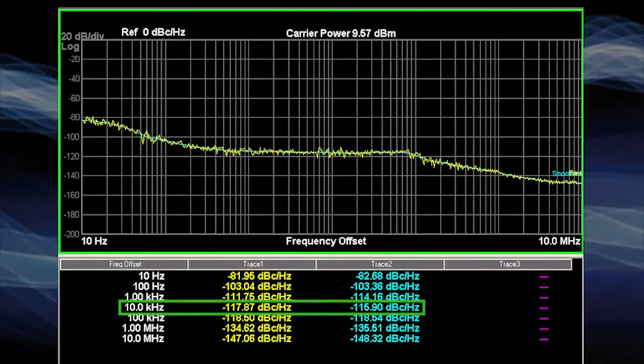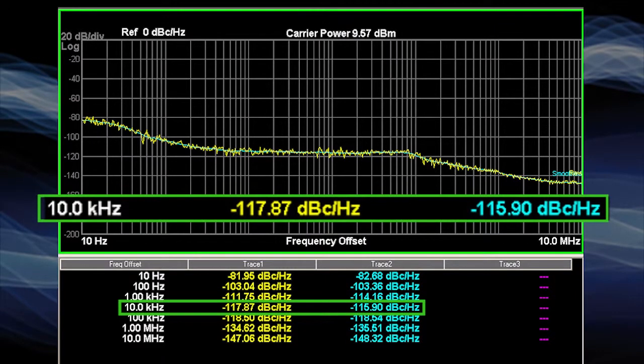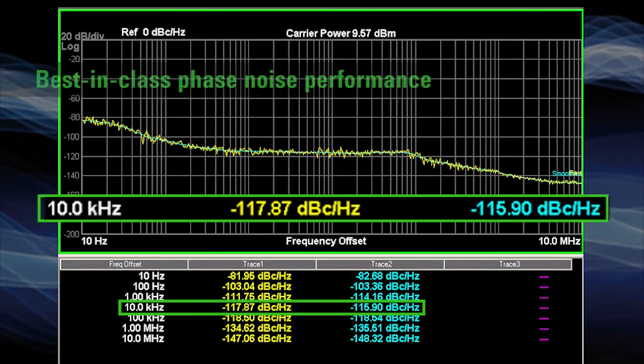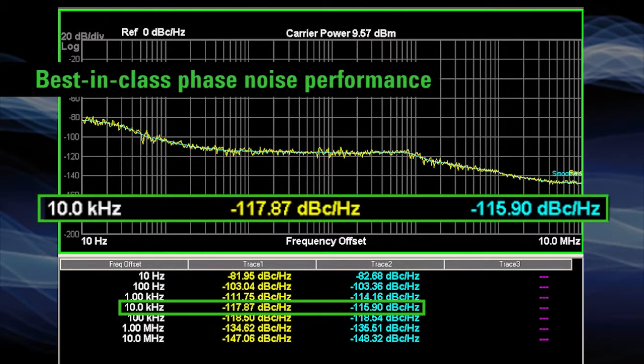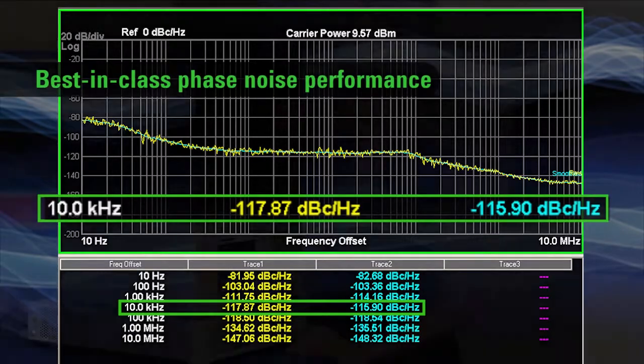One of the MXA's key assets is its phase noise performance. By improving close-in and pedestal offset frequencies by 10 dB or more, the MXA now offers best-in-class phase noise performance, a key factor for obtaining low and accurate error vector magnitude values for communication systems and devices.